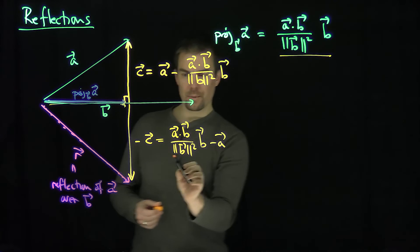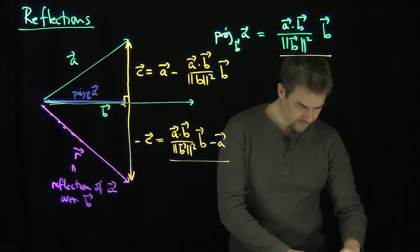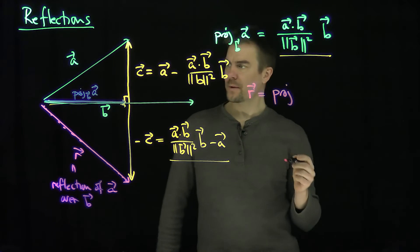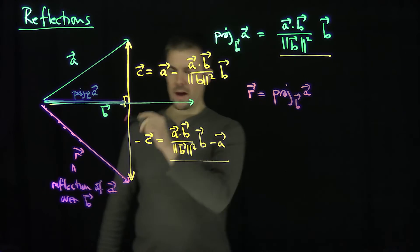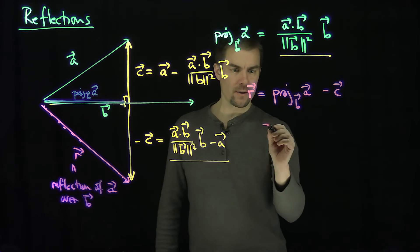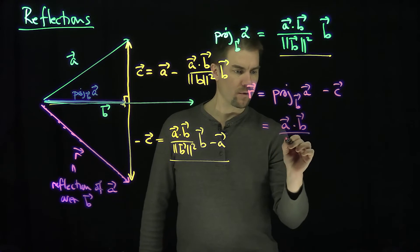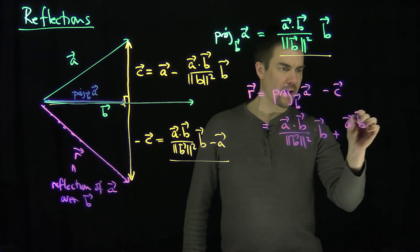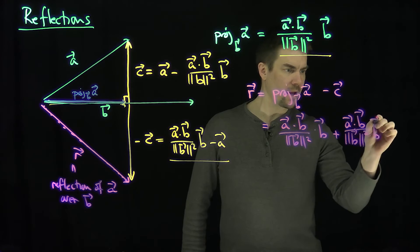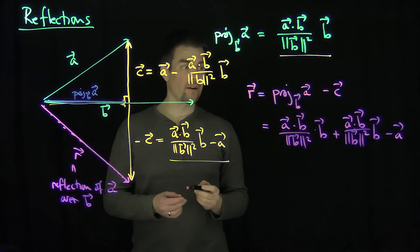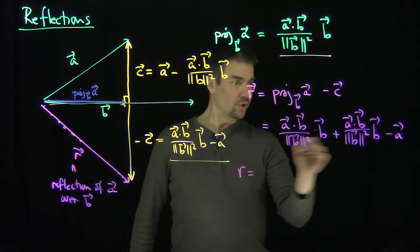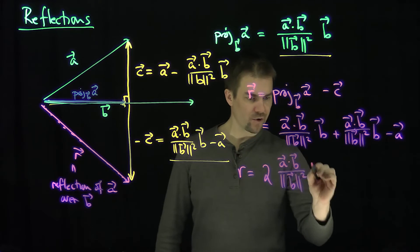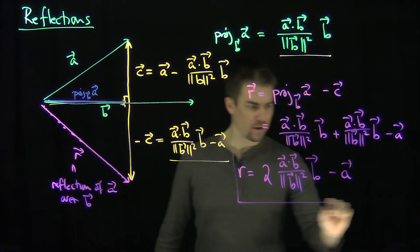The projection plus negative c gives me the vector r. So r equals the projection of a onto b minus c. Putting it all together: r equals a·b over the length of b squared times b, plus another a·b over the length of b squared times b, minus a. So our formula for r is two times a·b over the length of b squared times b, minus a. And there's the formula for our reflection vector.